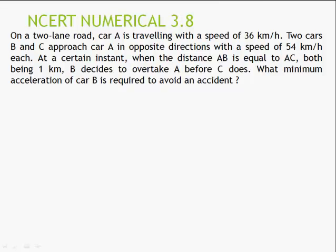Let's take one more numerical, NCERT 3.8. Car A is travelling at 36 km/h, and B and C are approaching at 54 km/h. B decides to overtake A before C does — we need to find the acceleration of B. To understand this question physically: A is on the right side, B on the right side, C on the opposite side. The distances are 1 km and 1 km. Converting speeds: 36 km/h → 10 m/s and 54 km/h → 15 m/s. You must not change the velocities of A and C.